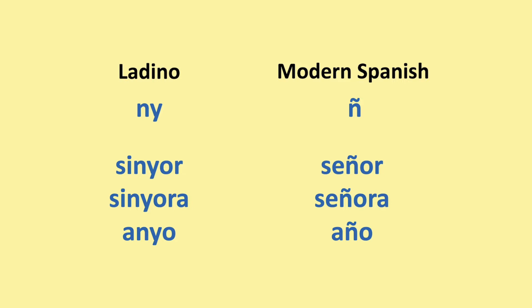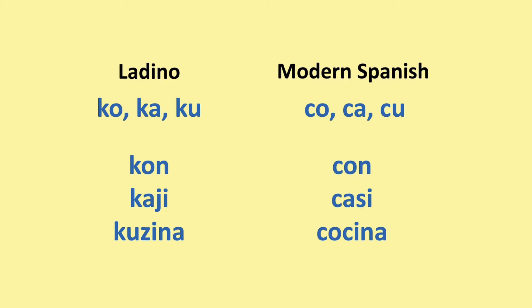The CO, CA, and CU in modern Spanish are usually written with KO, KA, and KU in Ladino. For example, 'kon' instead of 'con', 'kasi' instead of 'casi', 'kusina' instead of 'cocina' or 'cocina'.